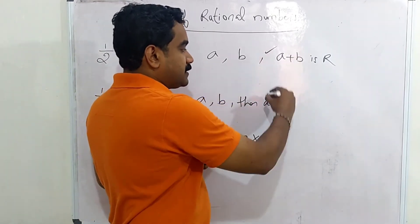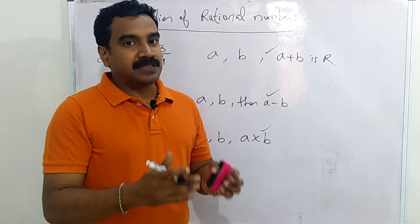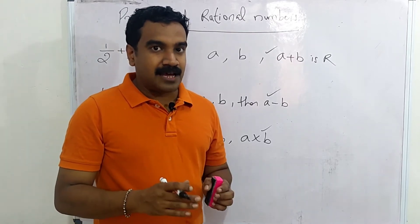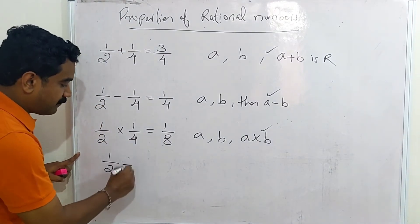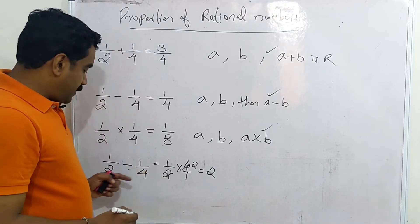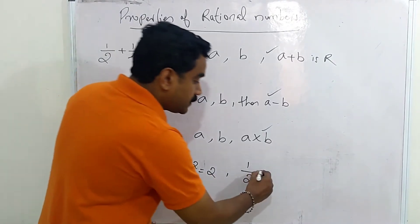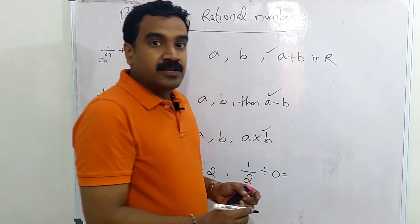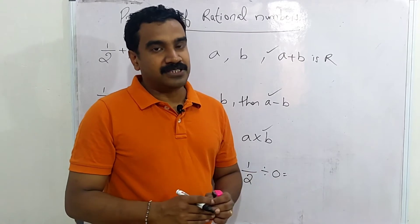So rational numbers are closed under addition, subtraction, and multiplication. This means that when you add a rational number with a rational number you get a rational number; rational number minus rational number is again a rational number; rational number into rational number is a rational number. Now let's check what happens with division. 1 by 2 divided by 1 by 4 equals 1 by 2 into 4 by 1, which is 2 — a rational number. But consider: 1 by 2 is rational and 0 is rational, yet half divided by 0 is not defined. So rational numbers are not closed under division.